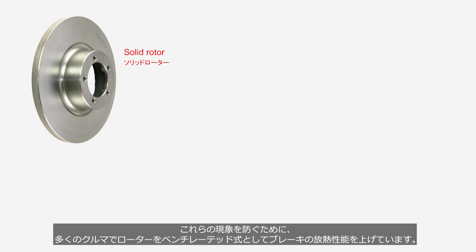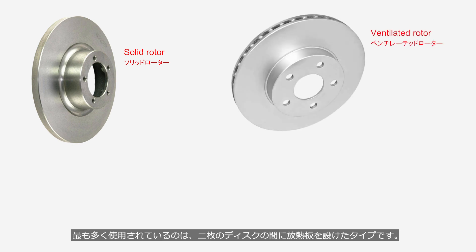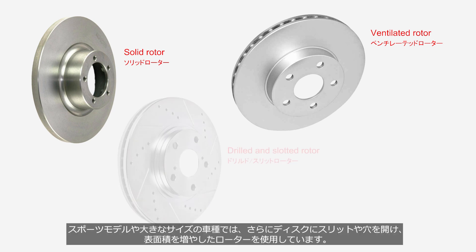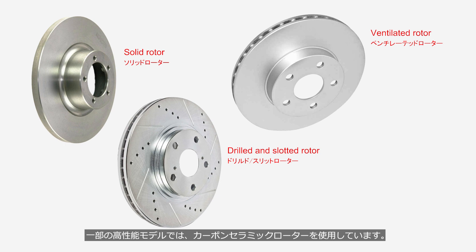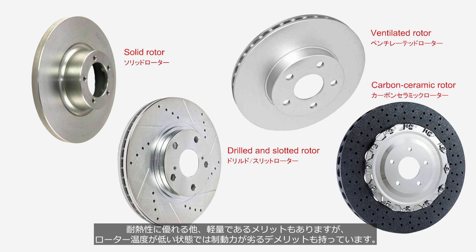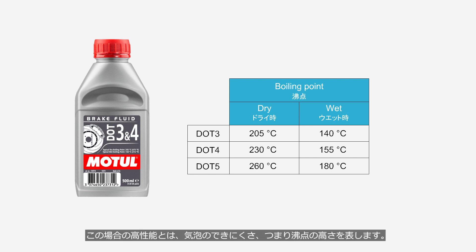To prevent these phenomena, many car models use ventilated rotors to improve heat dissipation performance. The most commonly used ventilated rotors feature a design with heat-dissipating plates placed between two discs. In sports models or large-size models, they use rotors with slits or holes drilled into them to increase surface area. Some high-performance models use carbon ceramic rotors. While they excel in heat resistance and offer the advantage of being lightweight, they also have the disadvantage of reduced braking performance when the rotor temperature is low. High-performance brake fluids are also available to prevent vapor lock, where high-performance refers to the resistance to bubble formation — in other words, the high-boiling point of the fluid.